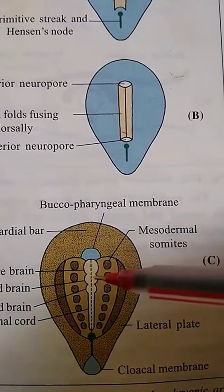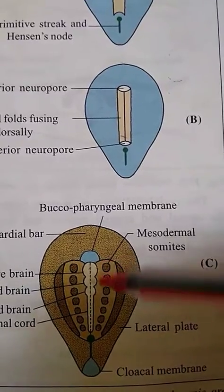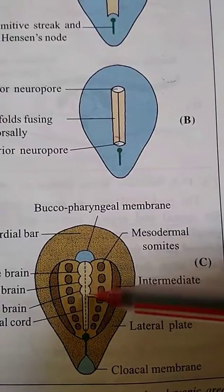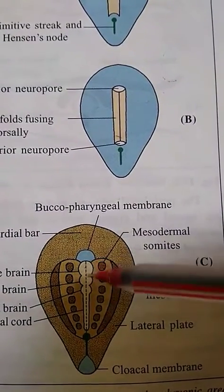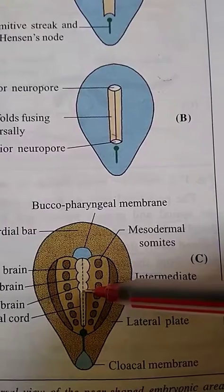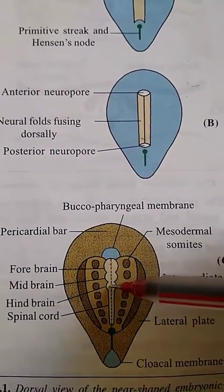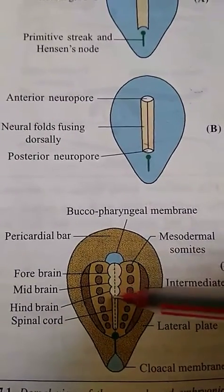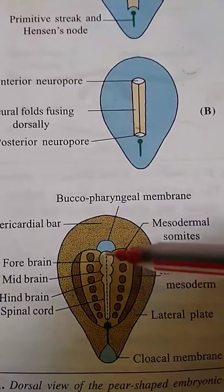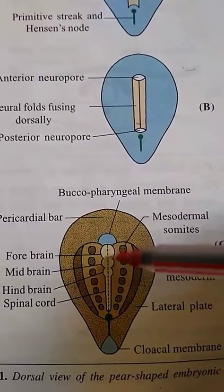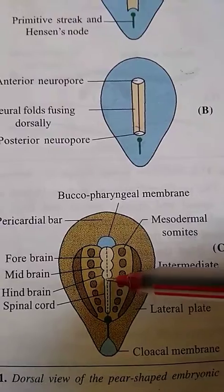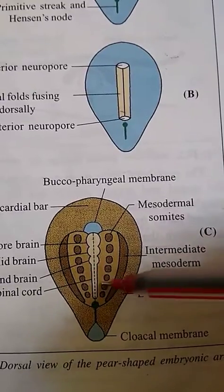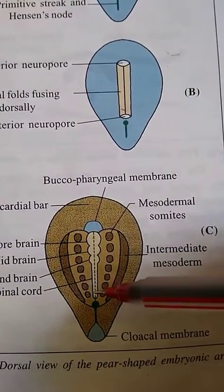After the formation of the neural tube, due to differences in the rate of growth and expansion in its wall, the cephalic part of the neural tube develops three successive dilatations known as primary brain vesicles — the forebrain, midbrain, and hindbrain vesicles — separated by circular constrictions. These vesicles lead to the development of different parts of the brain, and their cavities form the ventricular system as well as the cerebral aqueduct. The caudal part of the neural tube remains cylindrical, leading to the development of the spinal cord, and its cavity forms the central canal of the spinal cord.